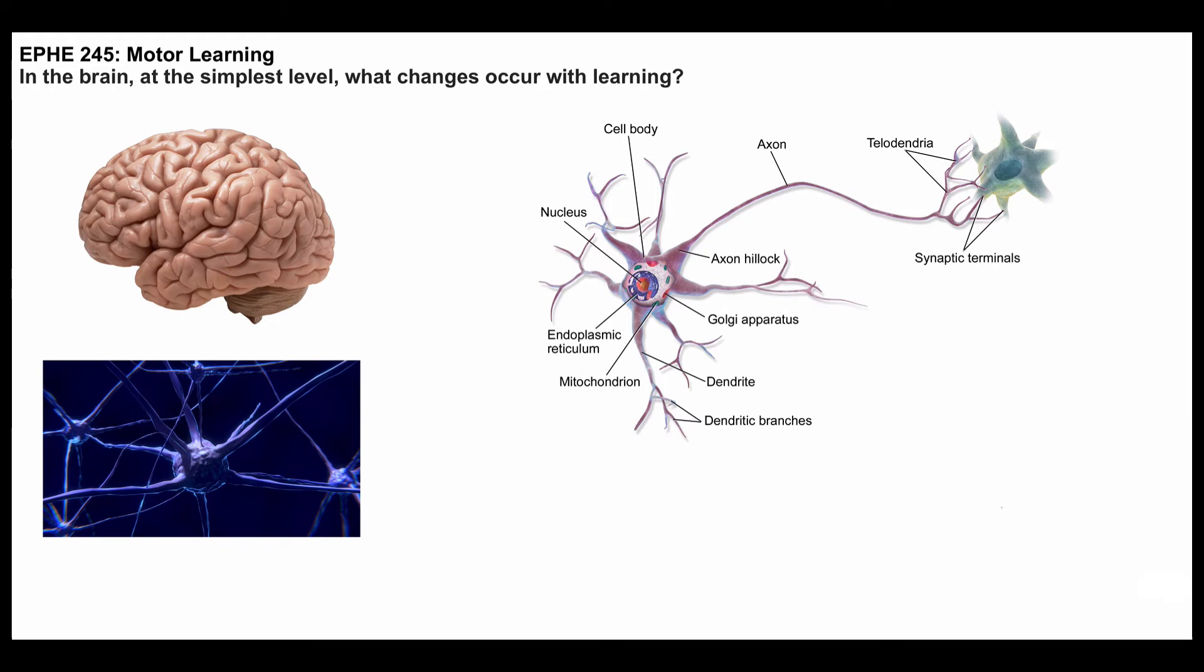What matters for us is what's happening right here, when we want to talk about what changes in the brain occur with learning. The simplest way to answer this is that those connections get stronger. And if these connections are stronger, then you've got what we would call a memory.